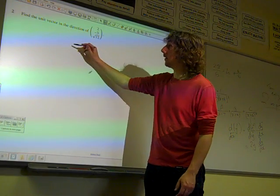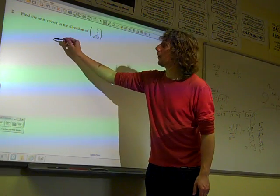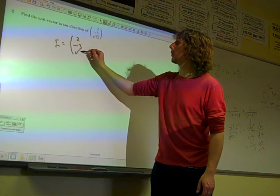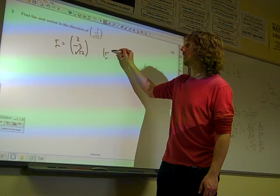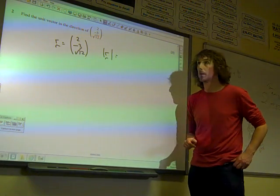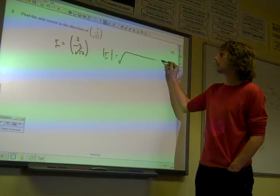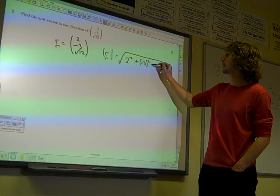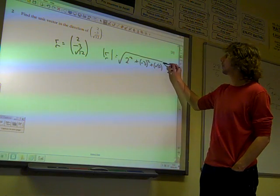So, that vector, if r is the vector 2, minus 3, root 12, then the length of that vector is the square root of 2 squared plus negative 3 squared plus root 12 squared.